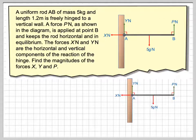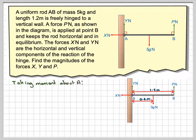Okay, so considering the diagram, the length of the rod is 1.2 and as the rod is uniform, the centre of mass will act halfway along the rod. So taking moments about A, taking moments about this point here.